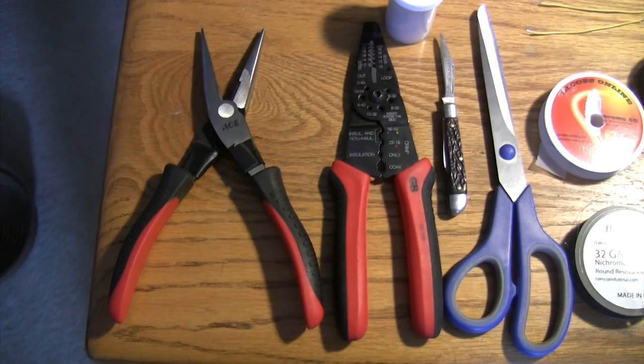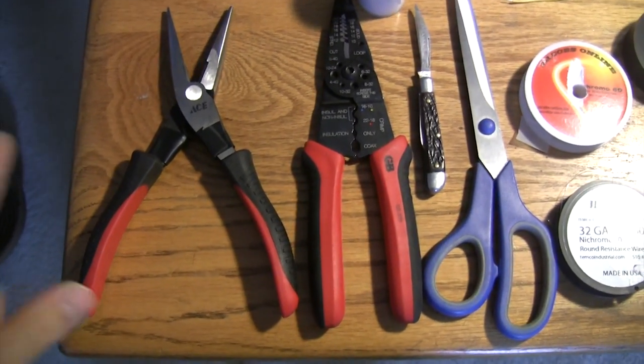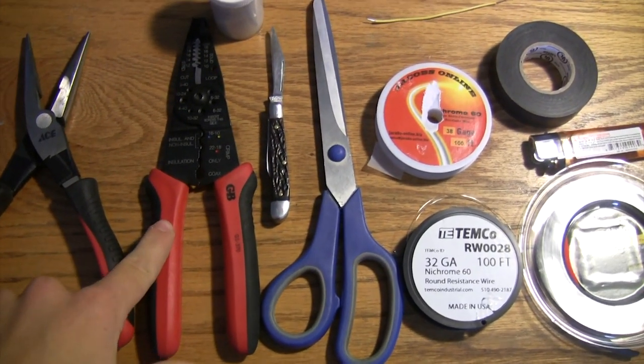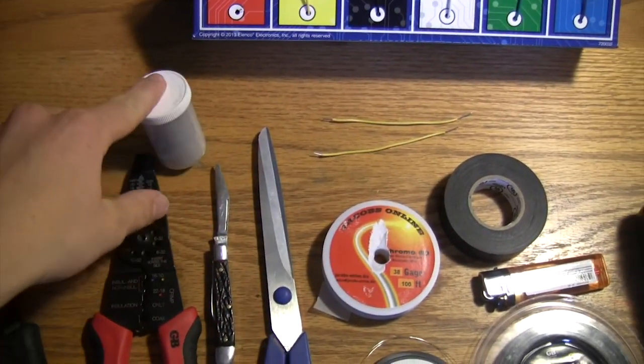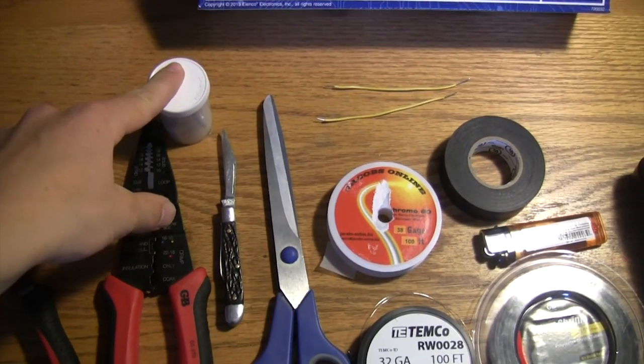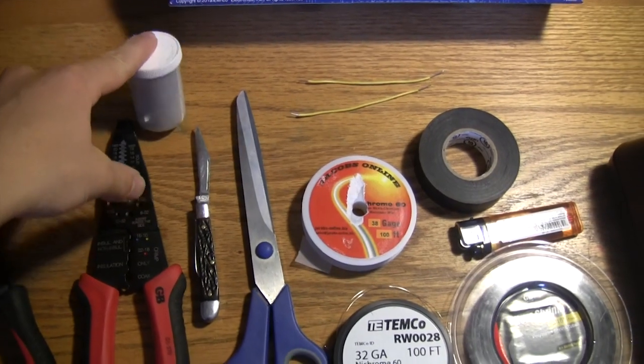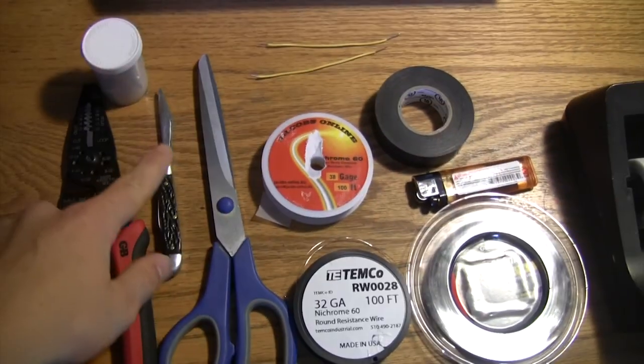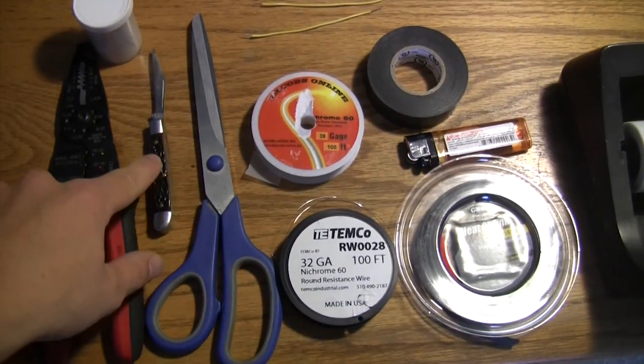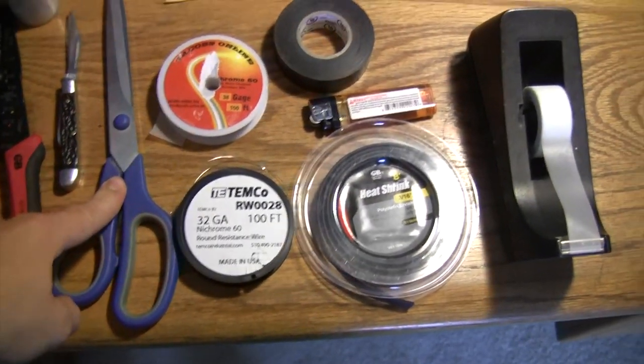For this project, you're going to need a few things. These are the supplies you will need. A needle nose pliers, a wire stripper, you're going to need some kind of flammable powder. It could be really anything you could think of. I'm using bottle rocket powder, and then something to scoop out the powder and put it on the igniter once you get to that point. You're going to need some scissors or a knife.